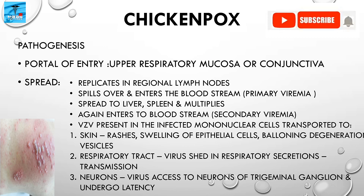After entry through the respiratory mucosa or conjunctiva, the virus replicates in the regional lymph nodes and spills over into the bloodstream — this is called primary viremia. It then spreads to the liver and spleen, multiplies there, and enters the bloodstream again, causing secondary viremia. The virus, present in infected mononuclear cells, is then transported to the skin, respiratory tract, and neurons.